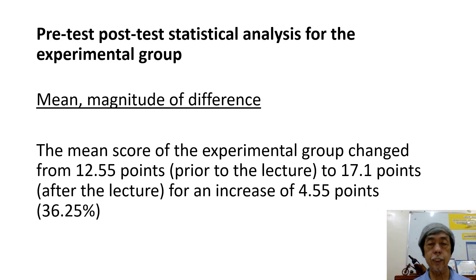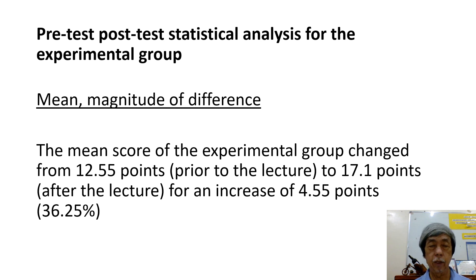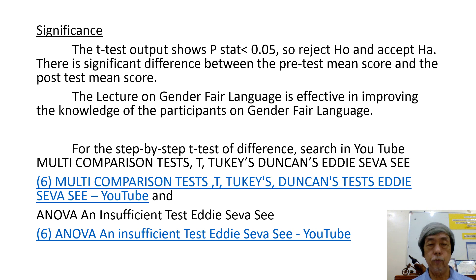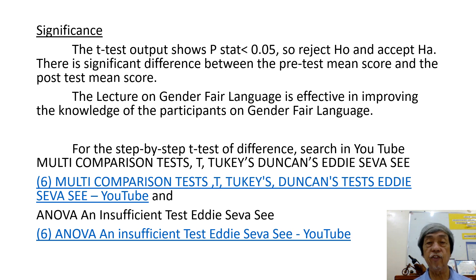This is the pre-test post-test statistical analysis for the experimental group. The mean score of the experimental group changed from 12.55 points to 17.1 points, for an increase of 4.55 points or 36.25%. The t-test output shows the p-statistic is less than 0.05, so we reject the null hypothesis and accept the alternative hypothesis. There is a significant difference between the pre-test mean score and the post-test mean score. The lecture on gender fair language is effective in improving the knowledge of the participants.